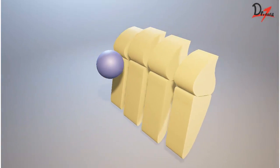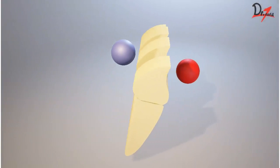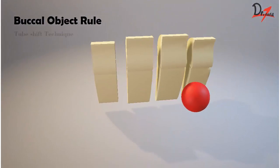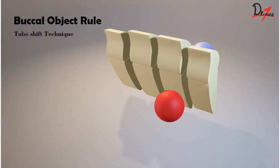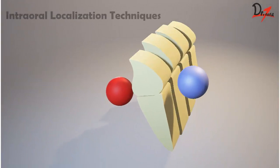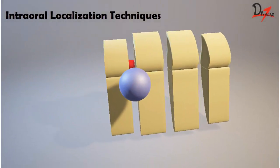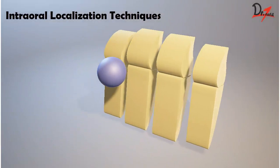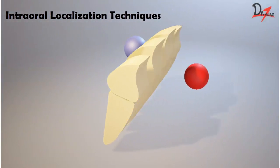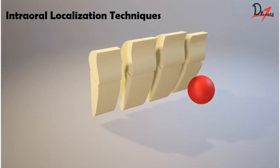One of them is the buccal object rule, also called the tube shift technique or Clark's rule. This is one of the intraoral localization techniques. It is a method which is used to locate the position of a tooth or an object in the jaws.